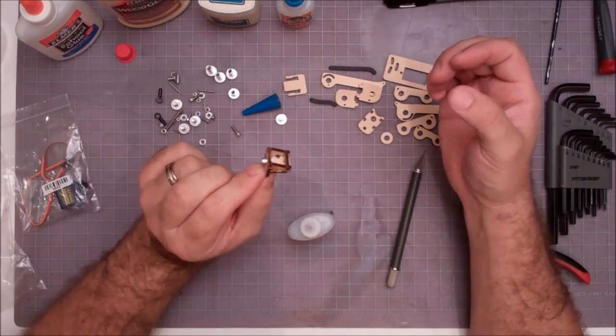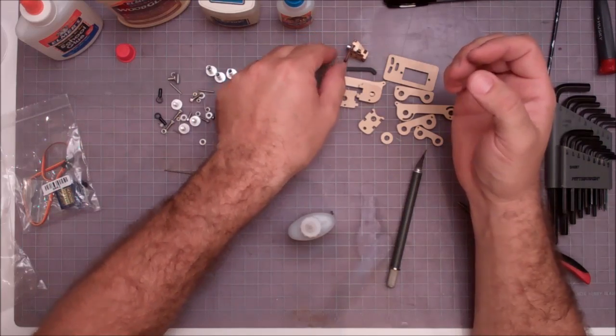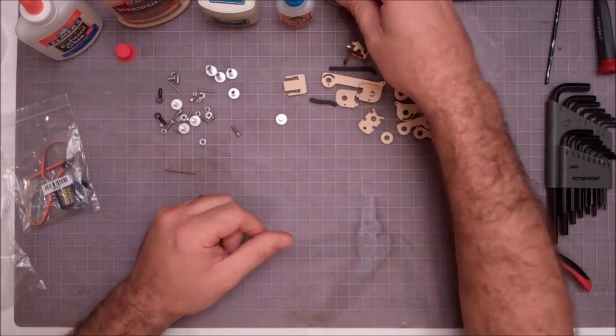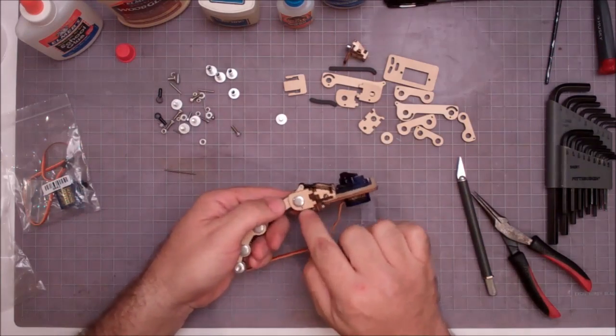So with the base part done, we'll go ahead and set it aside and we'll move on to assembling the other portion, which is the front piece with the D shapes here.